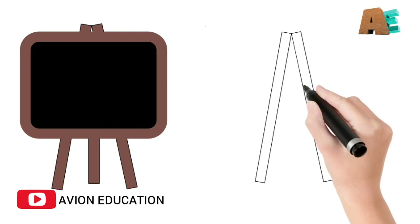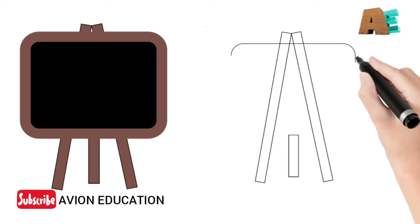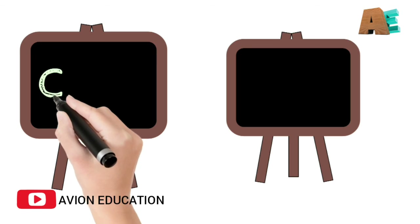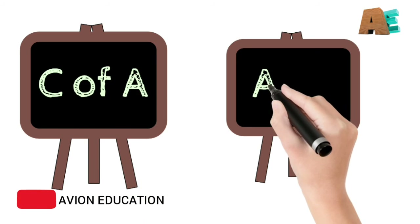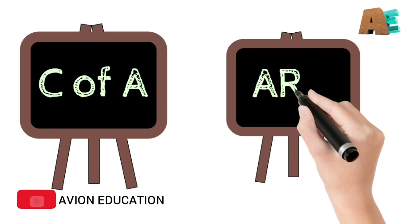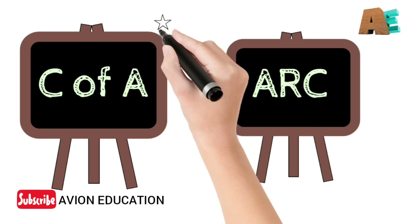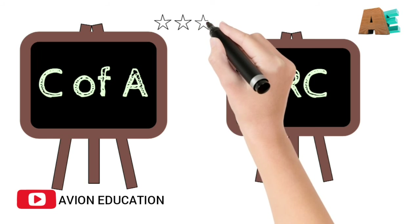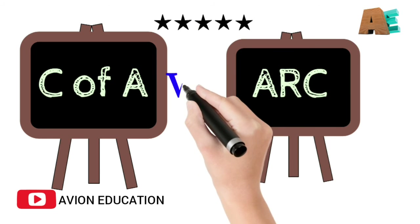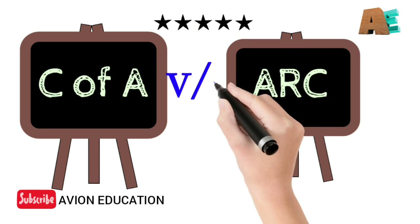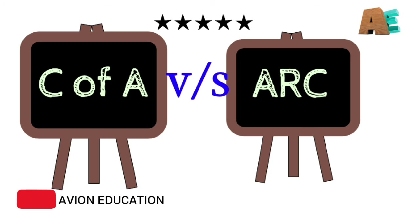This is how an ARC validates your Certificate of Airworthiness, that is your C of A, and this is how an important link between C of A and ARC is established. Hope you got your answers.